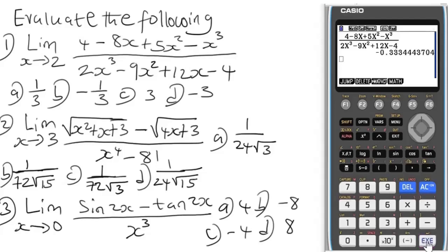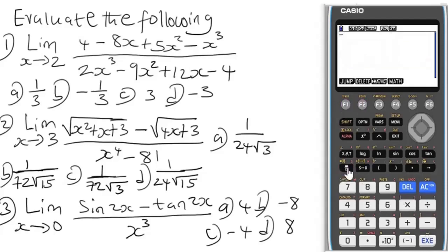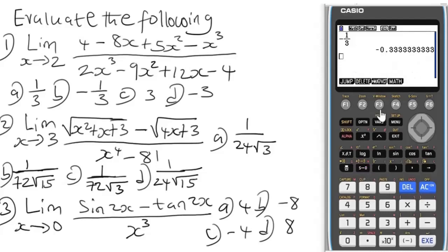The result is minus 0.33, which is the same as minus 1/3. Let's verify: minus 1 over 3 — press SD to convert to decimal — you can see minus 0.33. So the answer is minus 1/3, which is option B. That's as simple as that.